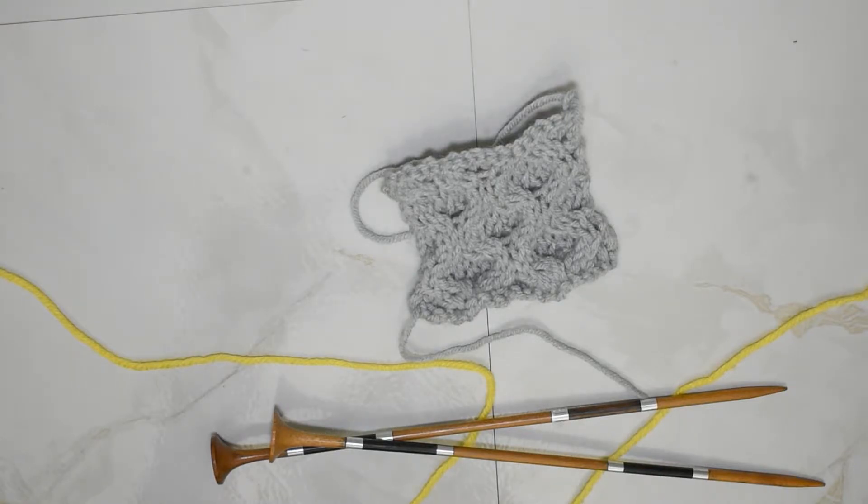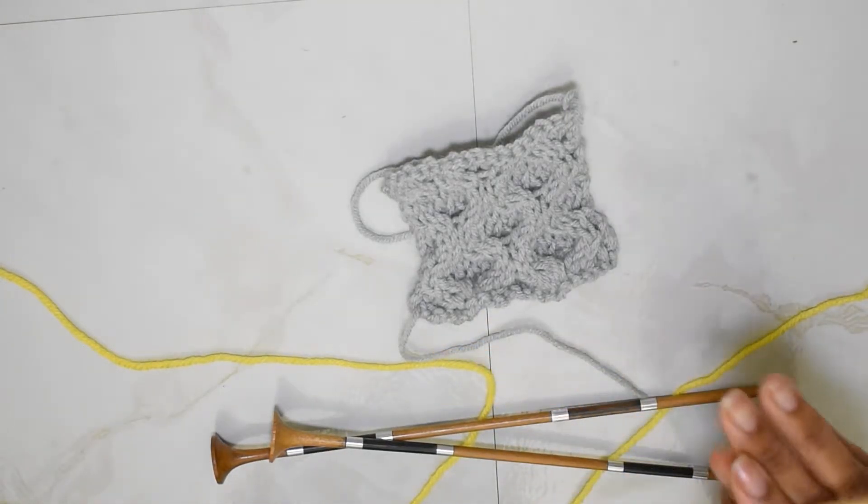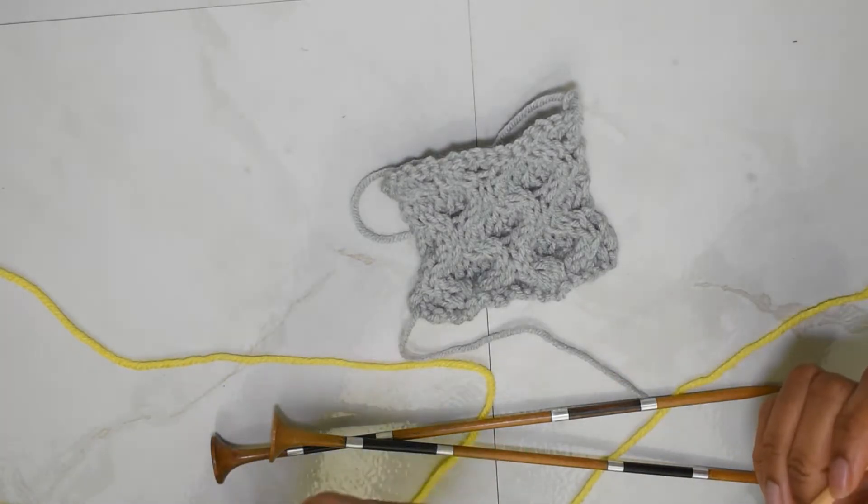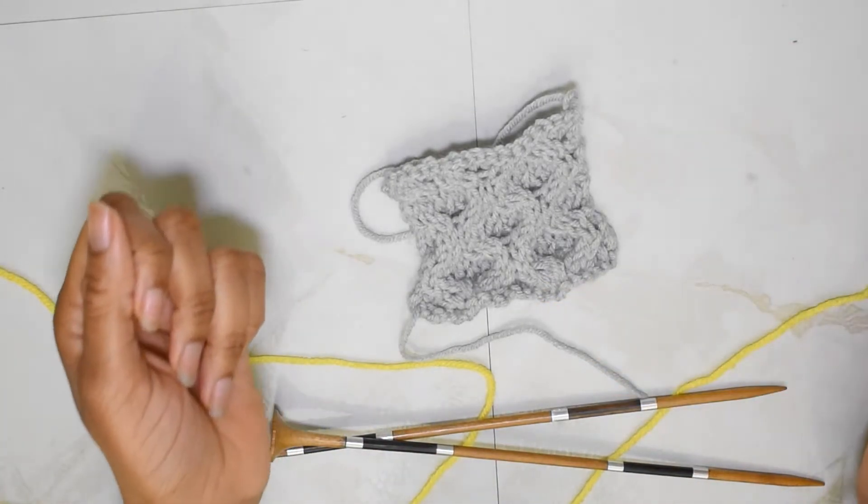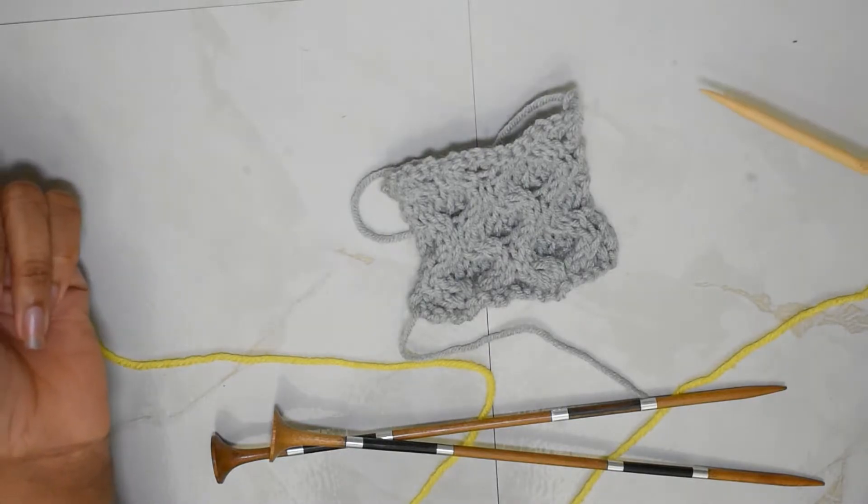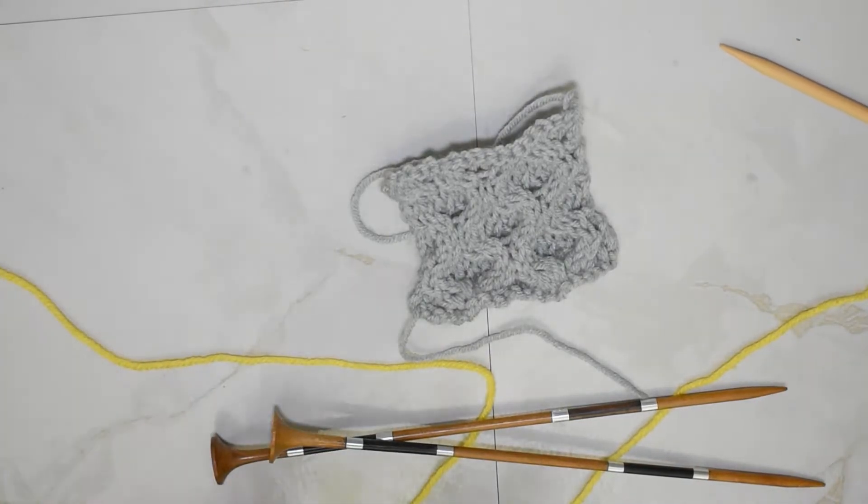But basically you just need the cable needle or DPN for holding stitches that you've slipped because yeah we're going to be slipping stitches. Alright and before I actually begin stitching please note that I do wrap my yarn a little bit differently than some other knitters. So if that bothers you feel free to find another tutorial just be nice about it in the comments. Alright and now I'm going to dive in.